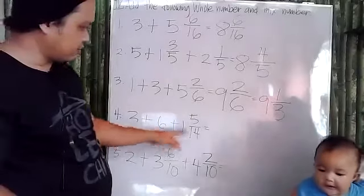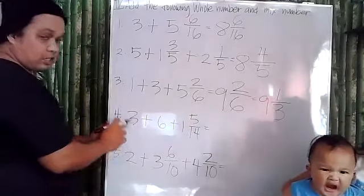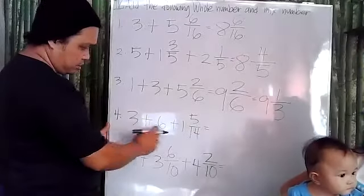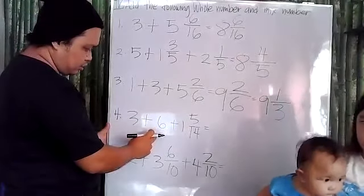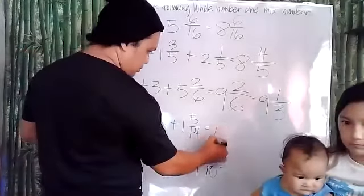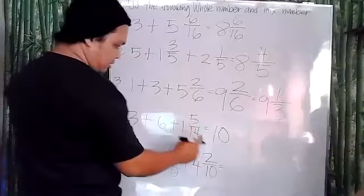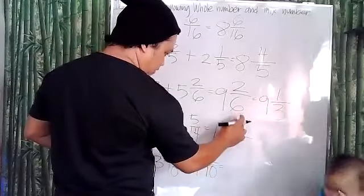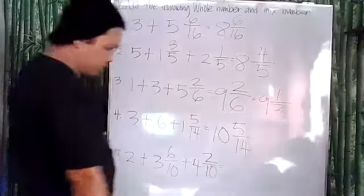Number four: three plus six plus one and five-fifteenths. Same process — let's add the whole numbers. So three plus six is nine, plus one is ten. And the fraction is five over fifteen, so our answer is ten and five-fifteenths.